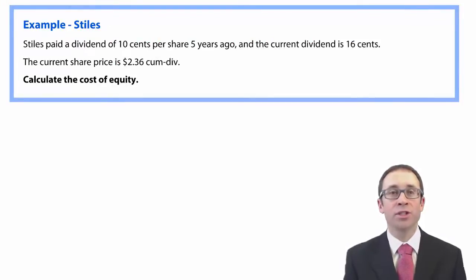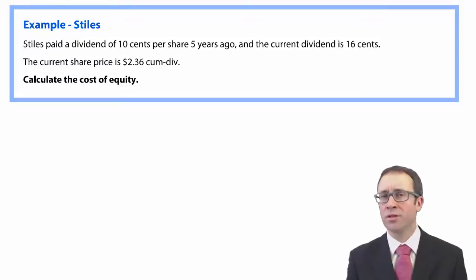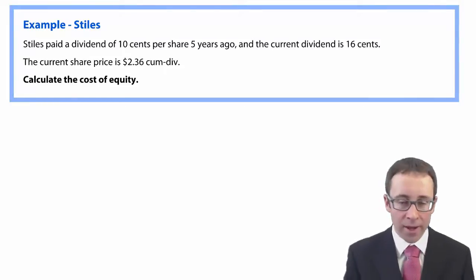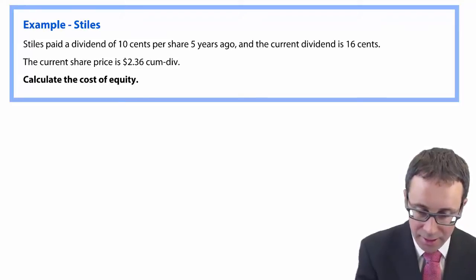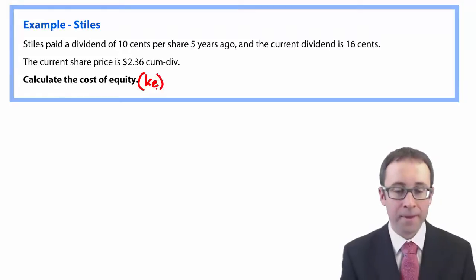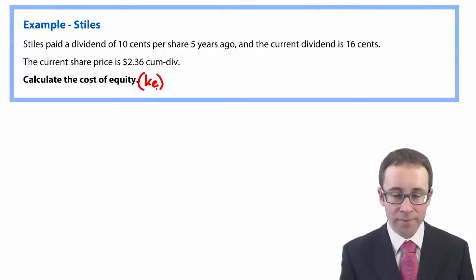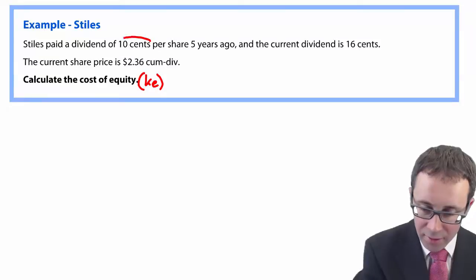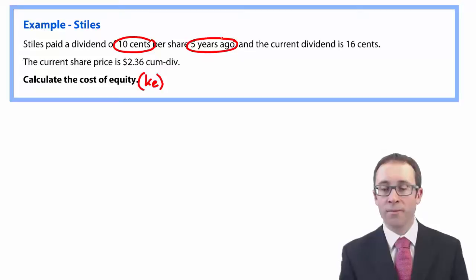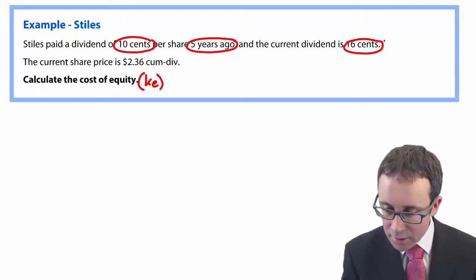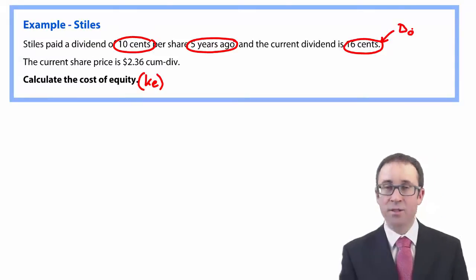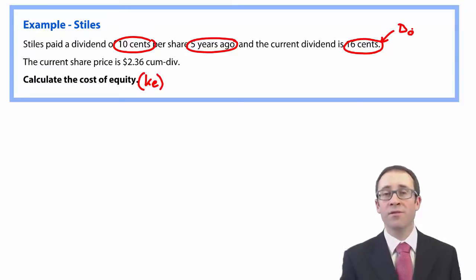Let's look at the example called Styles. It brings together calculating the cost of equity with historic growth, and there's also an adjustment to work out the ex-div price. The question asks us to calculate the cost of equity KE. Note it doesn't specifically say how to calculate the growth rate — you have to deduce it from the information given. We have a dividend of 10 cents from five years ago, and the current dividend D0 is 16 cents, so we can use the historic growth rate formula.